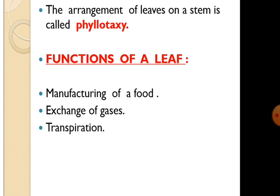The next function is the exchange of gases. Leaves contain many minute pores, especially on the lower surface of the leaves, and those minute pores are called stomata. Exchange of gases like carbon dioxide and oxygen takes place through these pores. Transpiration: plants give out extra water in the form of water vapor through stomata of leaves, and this process of loss of water through leaves is called transpiration.